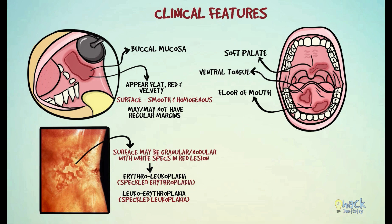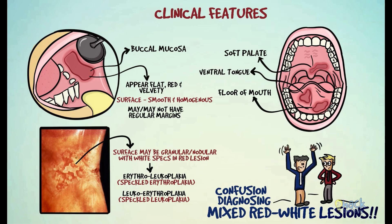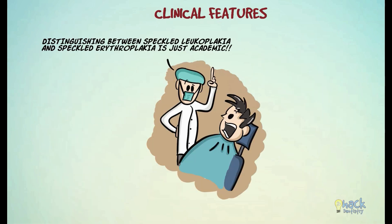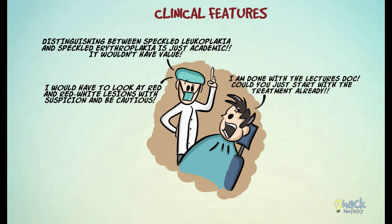This has been a problem addressed by pathologists and researchers. There has been much confusion in designating such mixed red-white lesions, as all these terms can be interchangeably used to describe Erythroplakia with red components or Erythroplakia with white components. However, such a distinction may be subjective and academic, and may not have much value, as mixed red-white lesions in general have to be treated with suspicion and patients have to be kept under close follow-up.